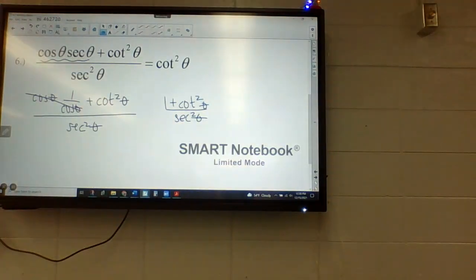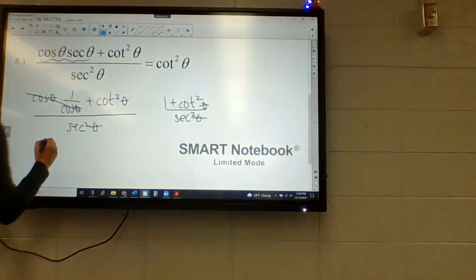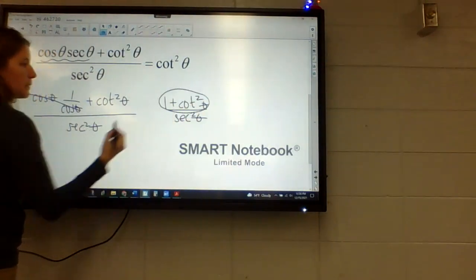What's one over cotangent, or what's one plus cotangent squared? Sorry, I put that wrong. It's cosecant. So this becomes cosecant. That's just a fact on our sheet.